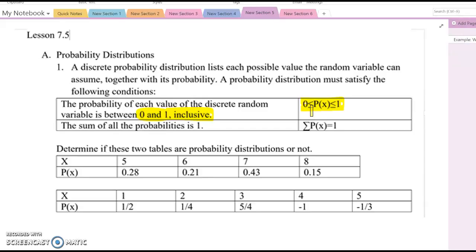Then think about the following two questions. Determine if these two tables are probability distributions or not. So I'm going to give you a few minutes. Please pause this video and combine this P(x) value and determine whether this table represents a probability distribution table or not. If you combine them, the total sum becomes 1.07. So this second condition is not satisfied. Therefore, this table doesn't represent a probability distribution table.